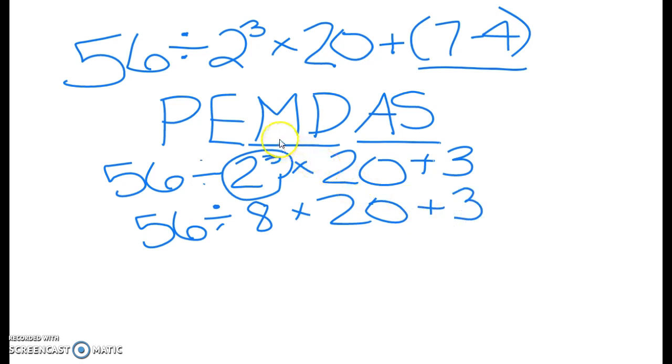Now is where the unique qualities of multiplication and division being together come into play. We have a division and we have a multiplication. You might see the M and think you should multiply first, but you don't. With multiplication and division, you work from left to right. So 56 divided by eight is seven, and then we continue to carry through. Seven times 20 is 140.